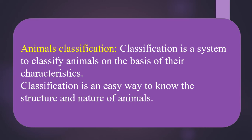Carolus Linnaeus is called the father of taxonomy. In the naming of animals, he introduced binomial nomenclature and defined genus and species. The scientific name of an animal contains two parts; the process of such naming is called binomial nomenclature. For example, Homo sapiens is the scientific name of humans. Scientific names must be in Latin or a Latinized language.